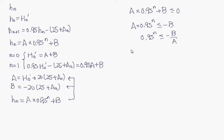So we will have n log 0.95 should be smaller than log minus B over A. And then we will get n should be larger or equal to 1 over log 0.95 times log minus B over A.